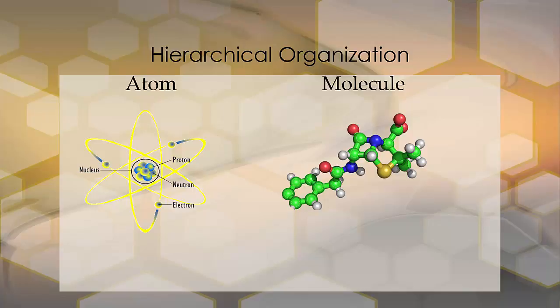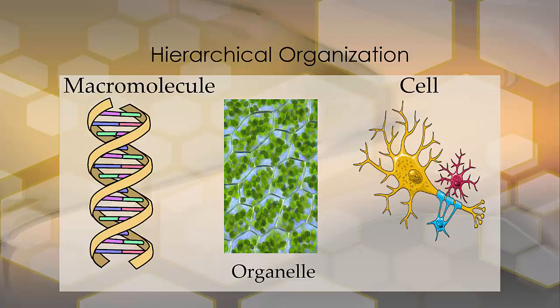Here's an atom, and then here's a molecule. There's a macromolecule, an organelle, and of course a cell. That's what it looks like.